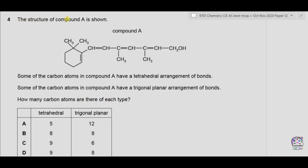Question 4. The structure of compound A is shown. Some of the carbon atoms in compound A have a tetrahedral arrangement of bonds, and some have a trigonal planar arrangement. In a tetrahedral arrangement, one carbon makes four single covalent bonds with four other atoms, and the bond angle is 109.5 degrees. In trigonal planar, the double bond is treated as a single bond, giving three bonds total, and the bond angle is 120 degrees.